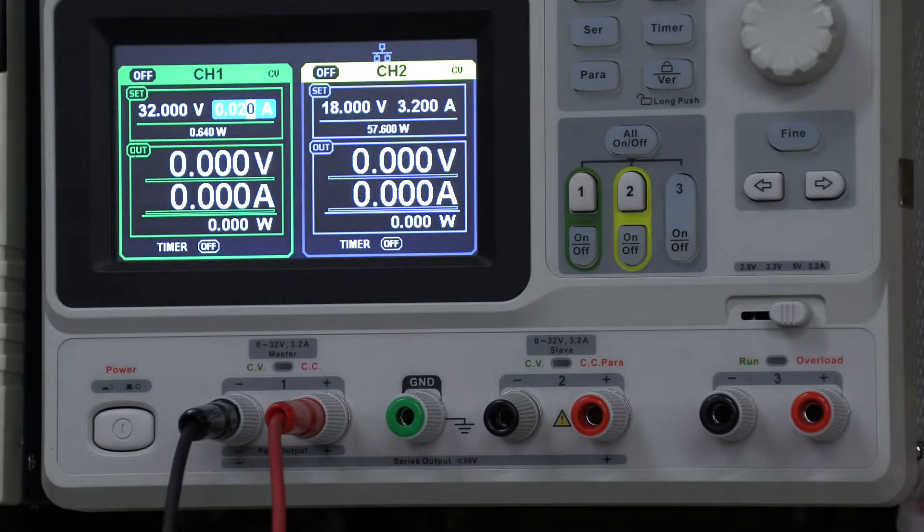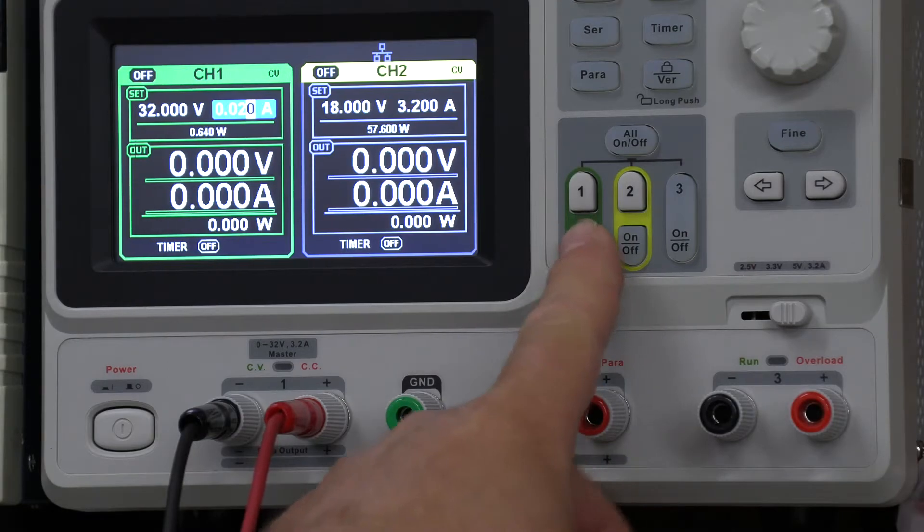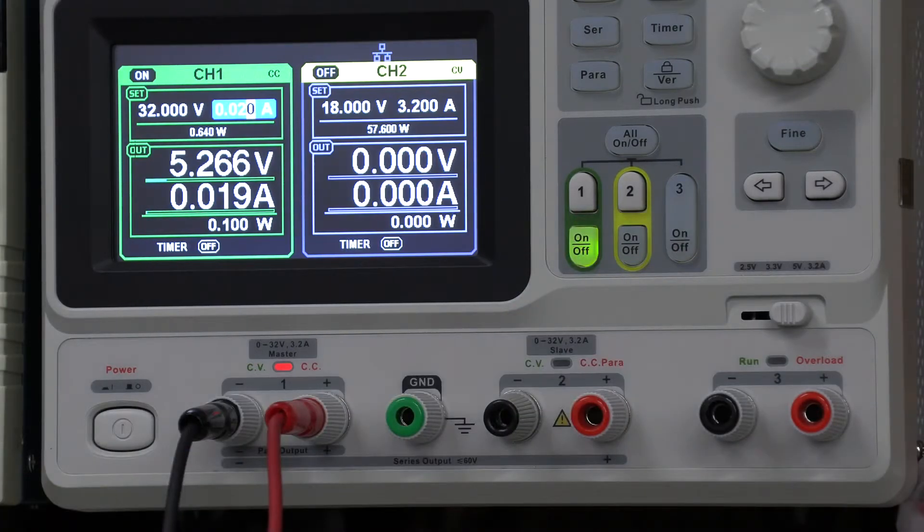Then, over on the power supply, all we do is turn the channel on and we watch the voltage go up. And that's 5.2. I'm guessing 5.2 volt, maybe 5.1 volt Zener. Certainly looking like 5.2 right here.